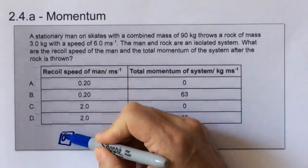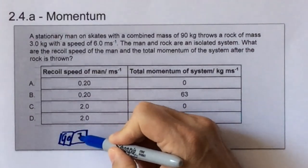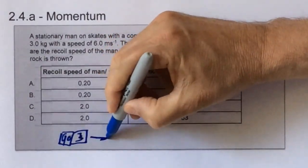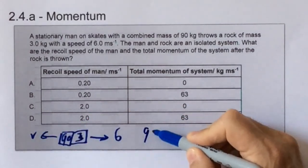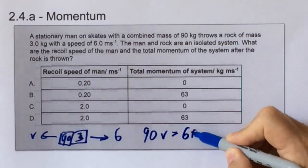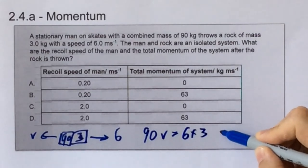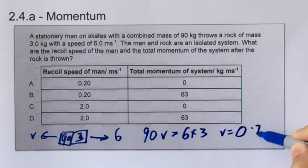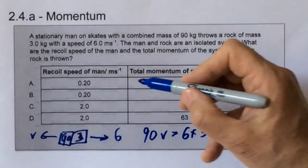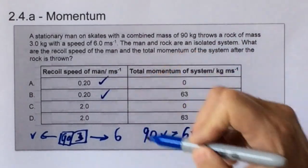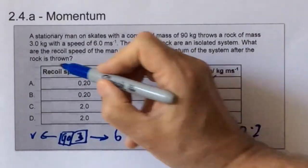The man has a mass of 90, and the rock has a mass of 3, and we know the velocity of the rock is 6. The velocity of the man is V. When we substitute that into the equation, we get that V is 0.2. And so we know that 0.2 is the recoil speed of the man, and we know that the total momentum of the system is 0 at the start, and so 0 at the end because it's standing still. And therefore the answer must be A.